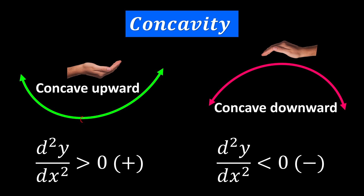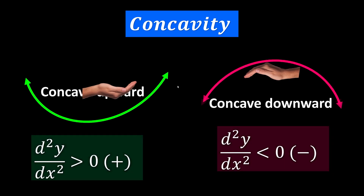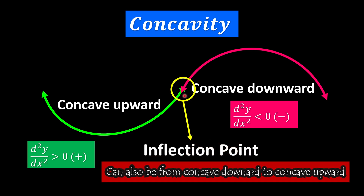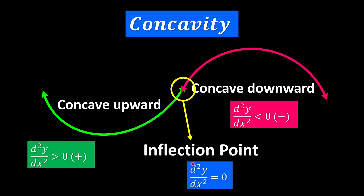When concave upward, we have the minimum value. When concave downward, we have the maximum value. If we combine these two curves, there is a particular point where we change from concave upward to become concave downward, and that particular point is what we call the inflection point. It has the value of d²y/dx² equal to zero.